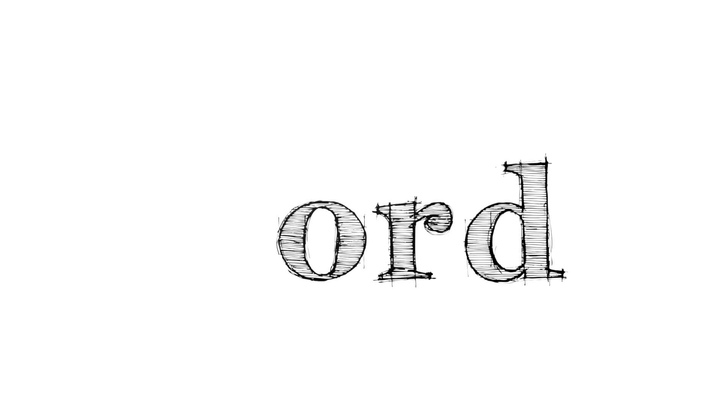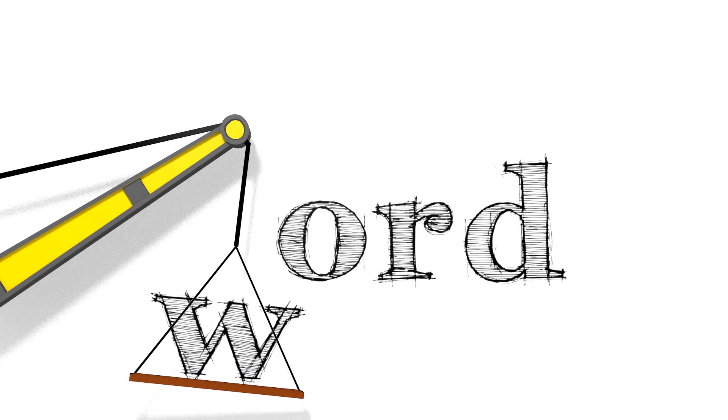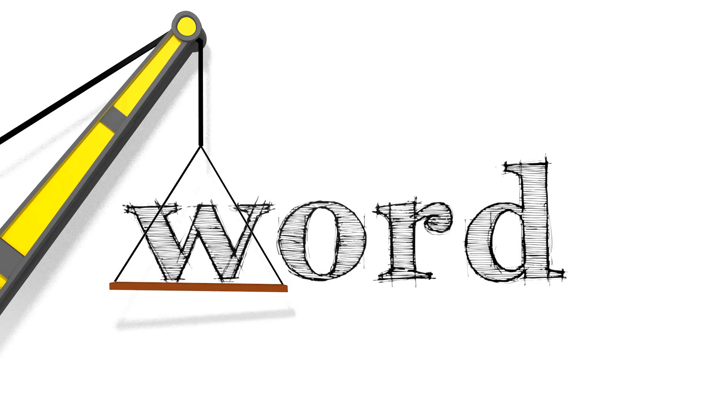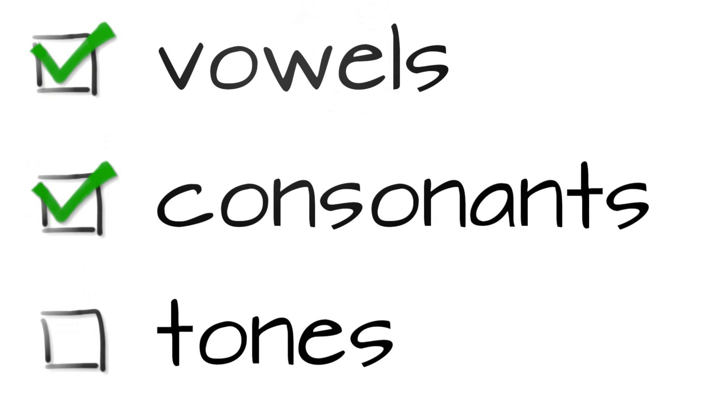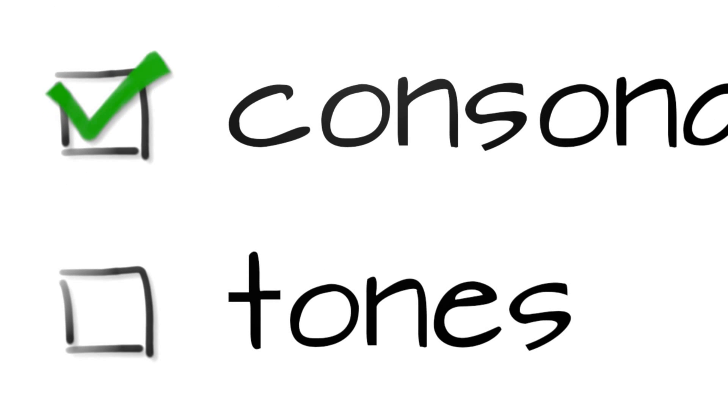When you think of the sounds that you put together to make a word, vowels and consonants come to mind. And that's good! Usually. But to build words in tonal languages like house or Mandarin, you need another set of musical pieces called tones to make meaning.